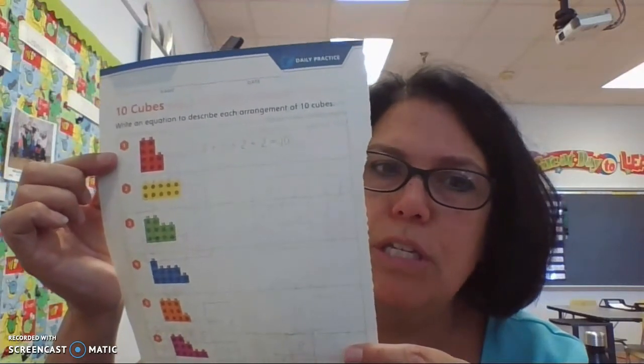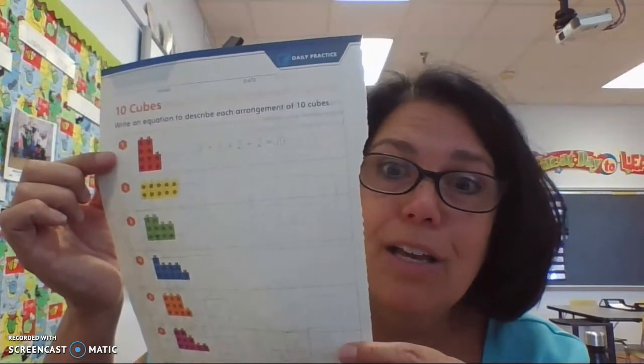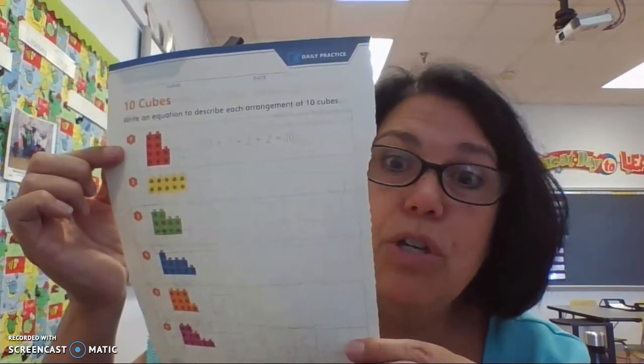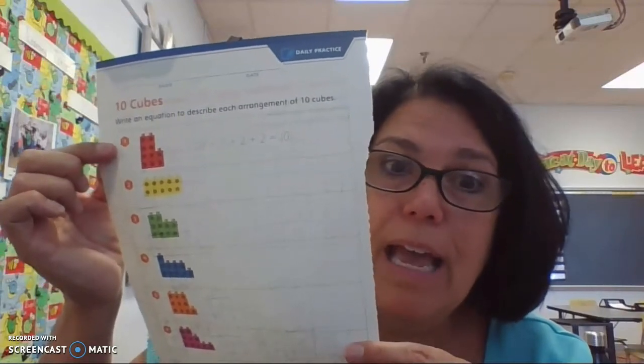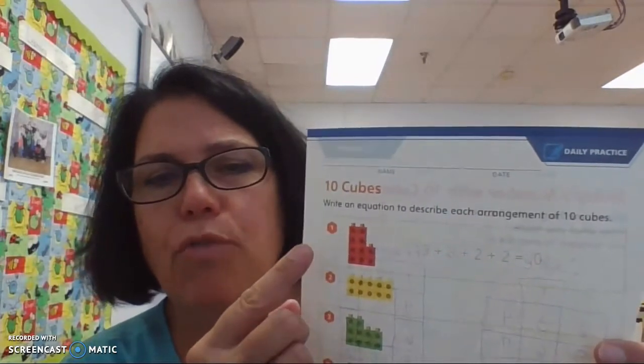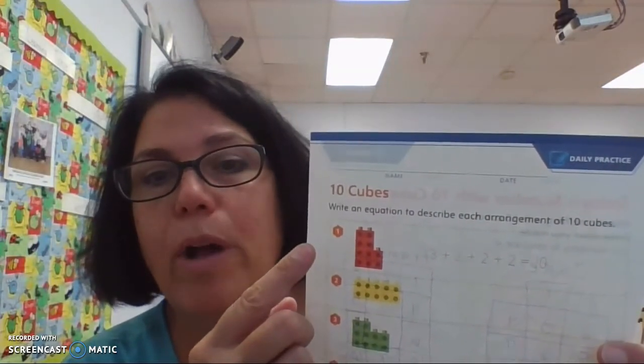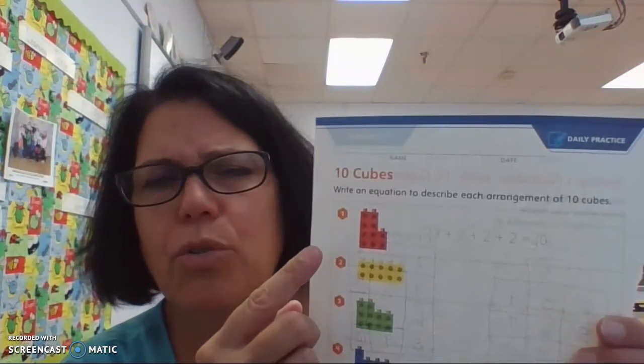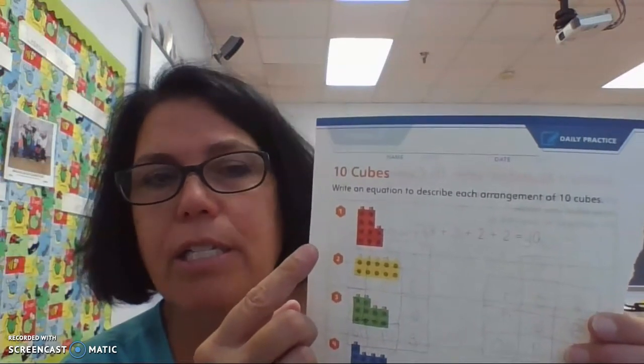So, if you look at this first picture at the top, where the connecting cubes are red, you're going to see that they had 3 on the bottom, 3 on the next row, 2 on the row after that, and 2 on the top. And then they wrote an equation. So, fill in your equation, 3 plus 3 plus 2 plus 2, and we found that those add up to 10.